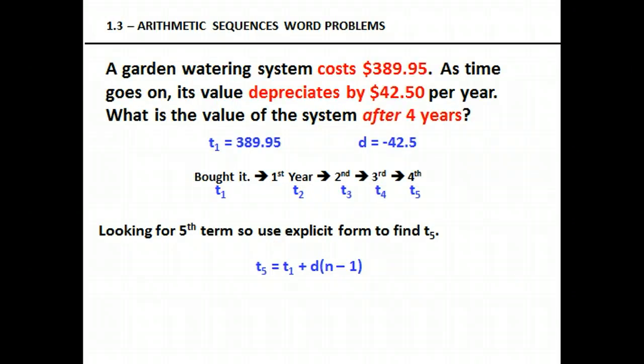A garden watering system costs $389.95. As time goes on, its value depreciates by $42.50 per year. What is the value of the system after four years? I'm always saying find your pertinent information. The important information here is that it costs $389.95 for the very first payment.